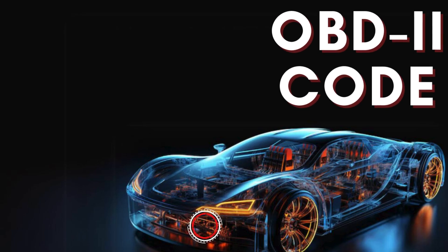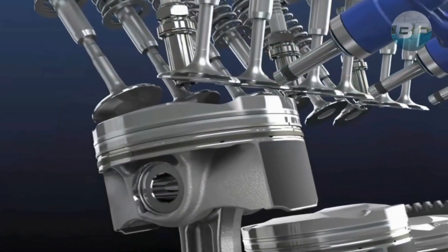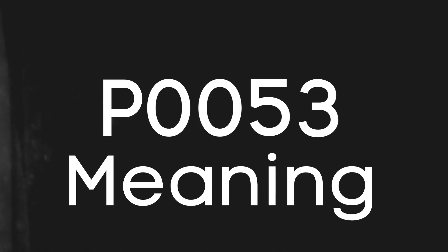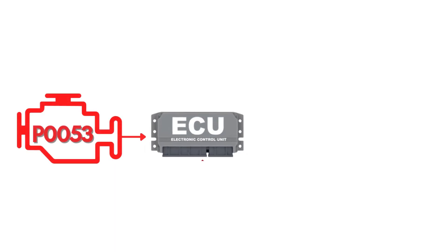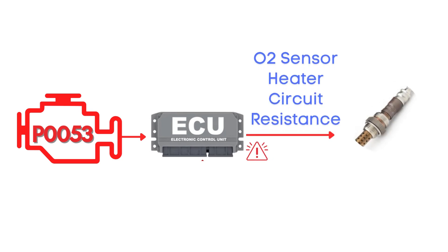Hey there! In this video, we're diving into everything you need to know about OBD2 Trouble Code P0053. First things first, let's break down what the P0053 code actually is. This code is triggered when the engine control module detects that the resistance in the oxygen sensor heater circuit isn't within the specified range.